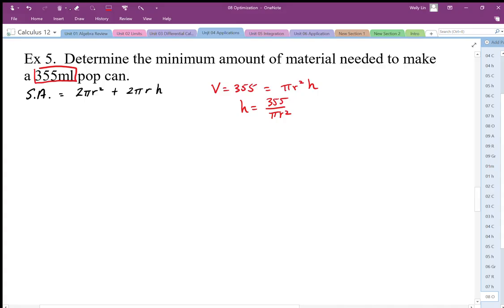Now I can rewrite the surface area as a function of the radius. I end up with 2πr² plus, when I plug in h, 2πr times 355 over πr². Notice that there's a lot of terms that will cancel out, so I should simplify this before I differentiate.